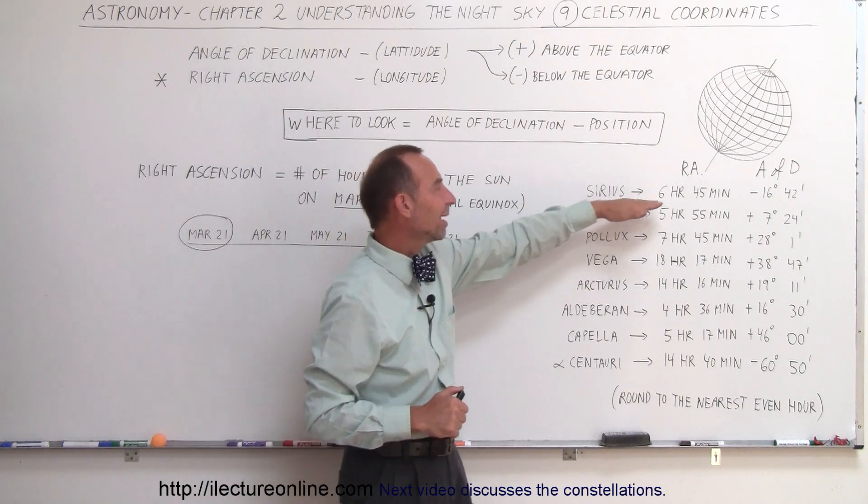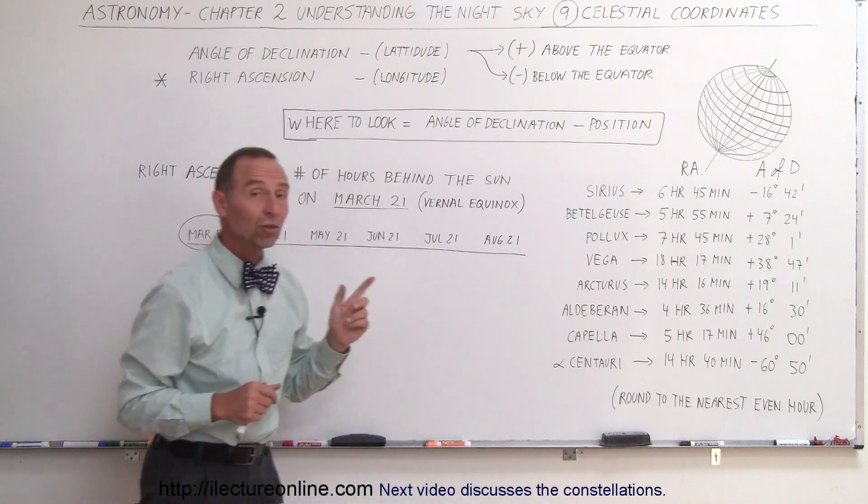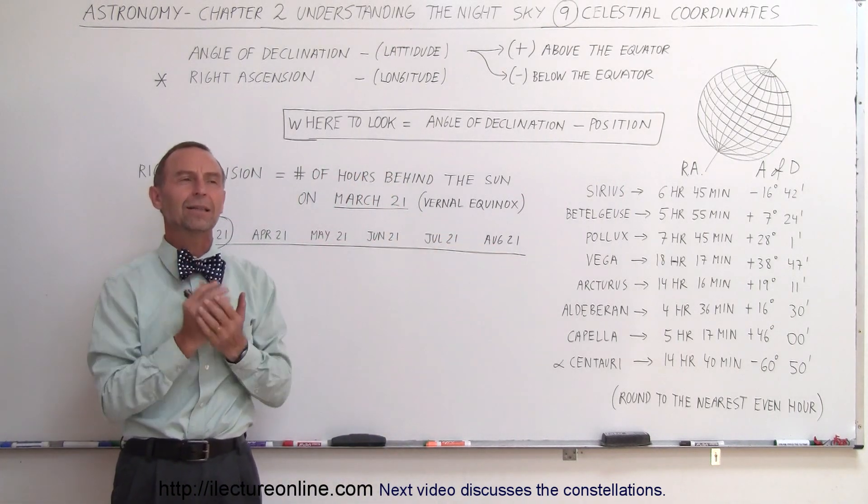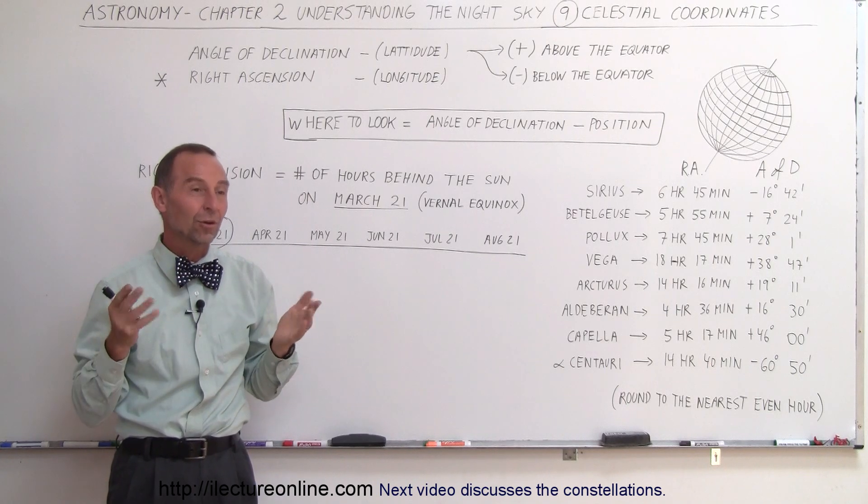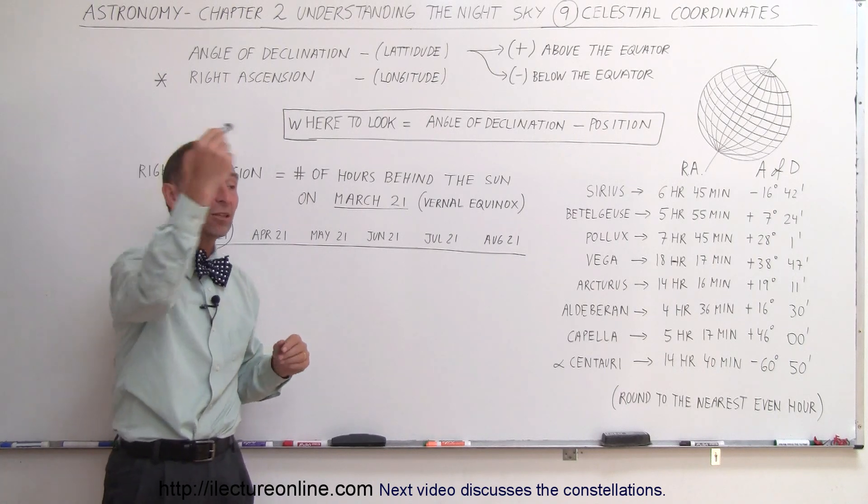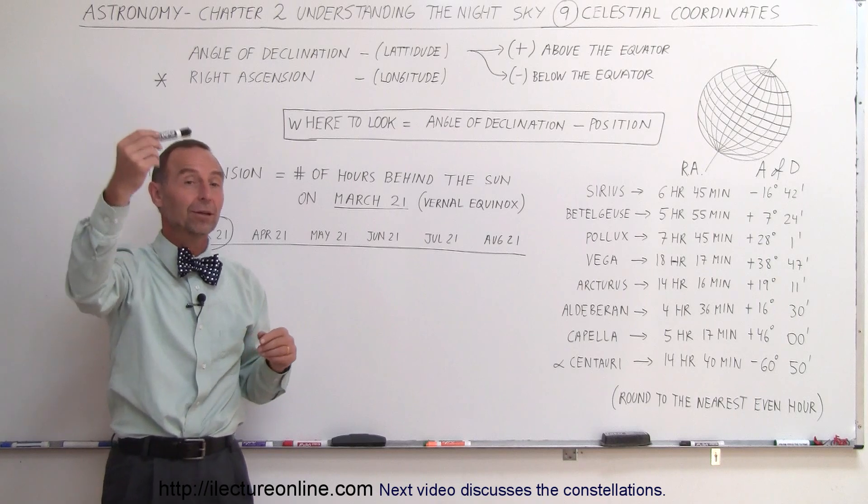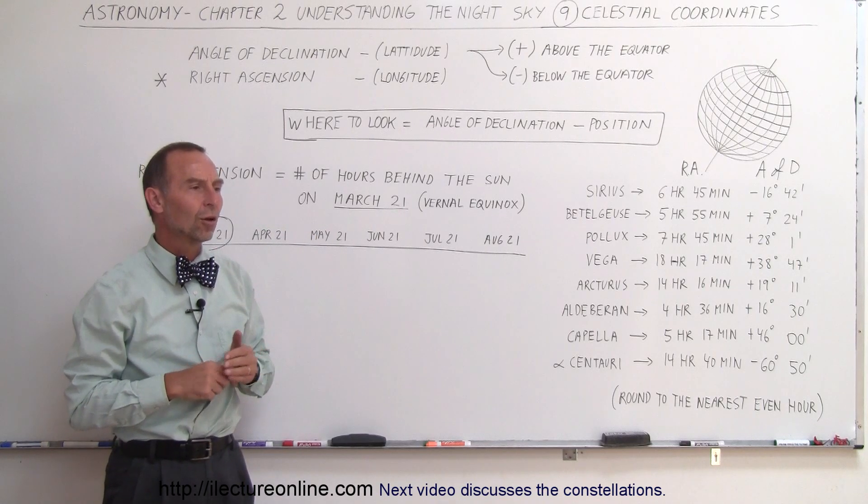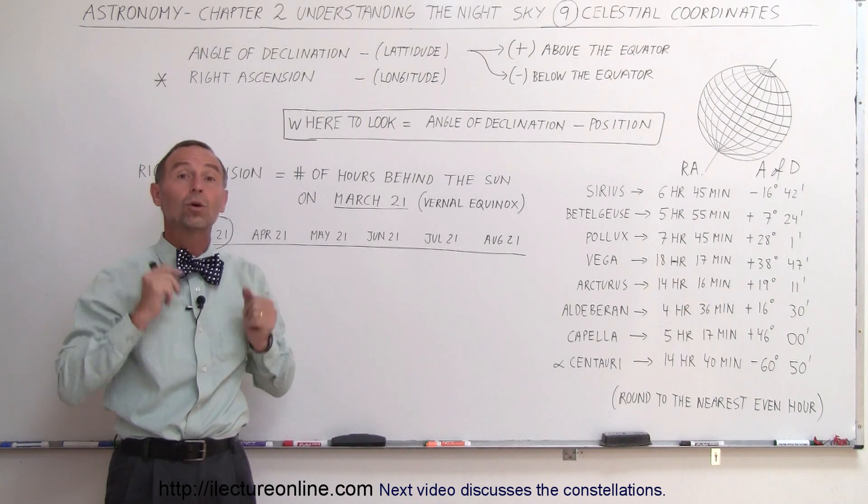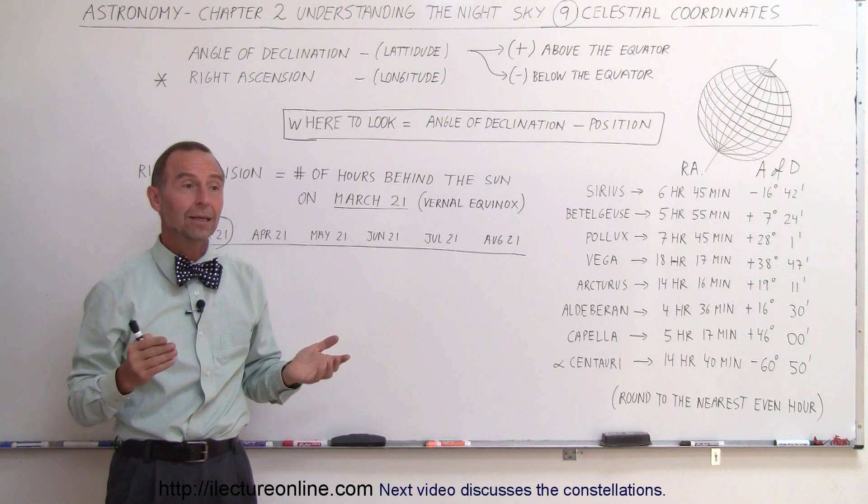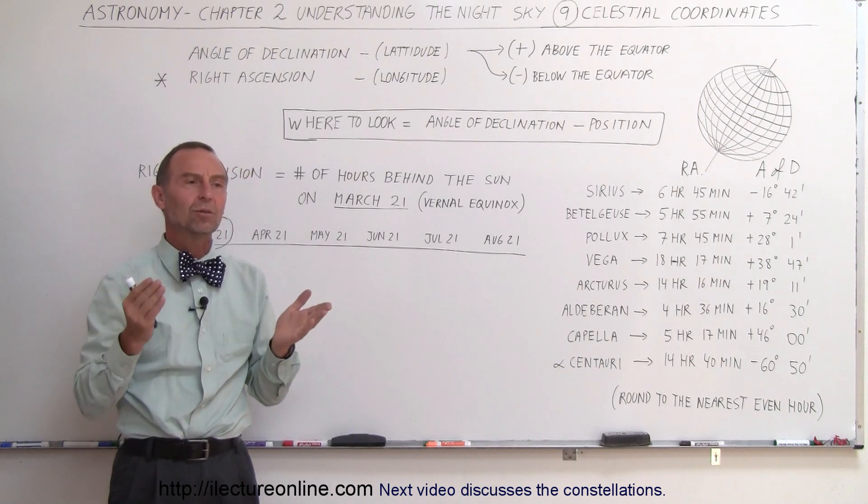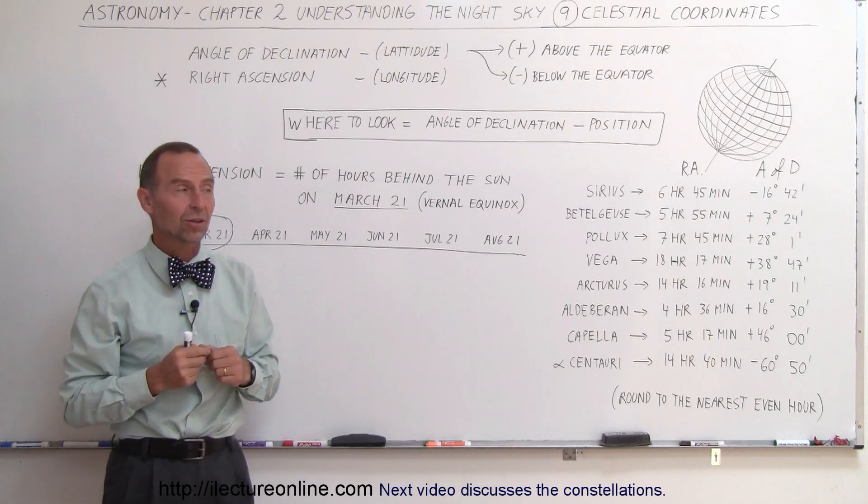So Sirius, let's say, is about six hours behind the Sun. So on March 21st, when the Sun sets, Sirius is six hours behind. Now how far is six hours? Remember that everything makes a complete trip in a 24-hour period. That's because the Earth rotates on its axis once every 24 hours. So six hours is one quarter of a 24-hour day. That would be one quarter of a complete circle, or 90 degrees. Because four times 90 is 360 degrees.